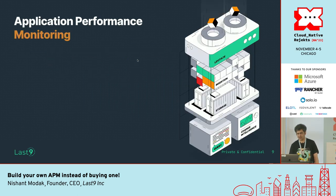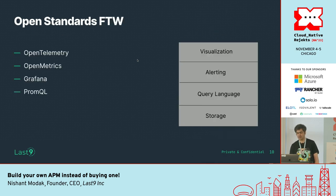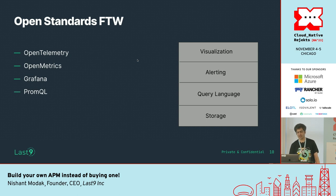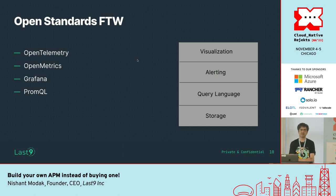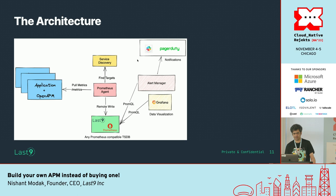In an existing system, to do this APM, we could leverage existing infrastructure across storage, query language, alerting, and visualization. Visualization could come through Grafana, because we already have that running. Alerting could be AlertManager or Grafana alerting. Query language: PromQL. And storage: Prometheus.